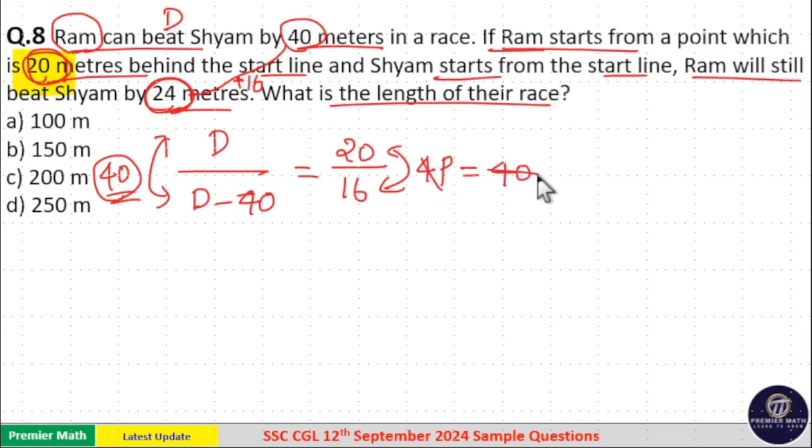4 parts is 40 means 1 part is equal to 10 meters. Then, here length of the race means distance covered by Ram. Here, distance covered by Ram is 20 parts. So, 20 into 10, 200 meters is the length of the race. Option C is your answer.